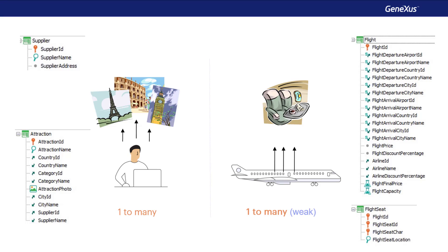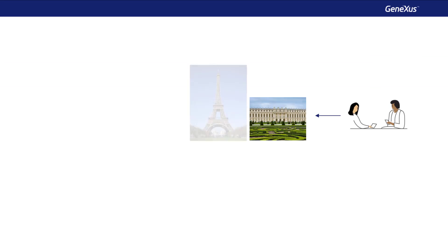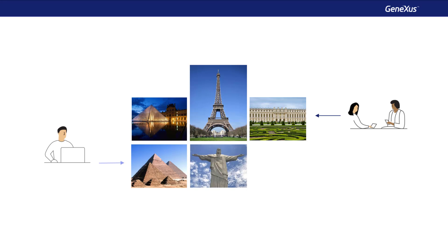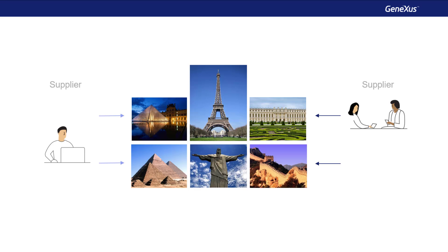So far we've seen one-to-many relationships, but they don't always fit the reality we want to represent. For example, suppose the Travel Agency tells us their reality has changed: each Supplier offers many Tourist Attractions as before, but each Attraction can now be managed by several Suppliers — not only one. The relationship between Suppliers and Attractions is no longer one-to-many, but many-to-many.